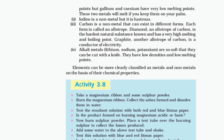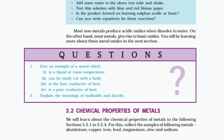Elements can be more clearly classified as metals and non-metals on the basis of their chemical properties. Activity 3.8: Take a magnesium ribbon and some sulfur powder. Burn the magnesium ribbon. Collect the ashes formed and dissolve them in water. Test the resultant solution with both red and blue litmus paper. Is the product formed on burning magnesium acidic or basic? Now burn sulfur powder. Place a test tube over the burning sulfur to collect the fumes. Add some water and test with litmus paper. Most non-metals produce acidic oxides when dissolved in water; most metals give rise to basic oxides.